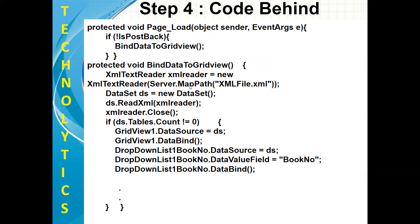In the XMLTextReader object, we send a parameter such as my XML document file name. For the parameter, I'm using the method MapPath, which is defined in the Server class — so Server.MapPath followed by the name of my XML file, which we have already added in our project solution. If you have directly added it, you can write the name directly. But if you have created some folder in your App_XML folder, then you have to specify the entire path.